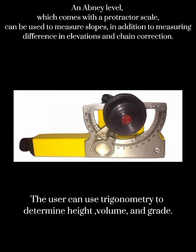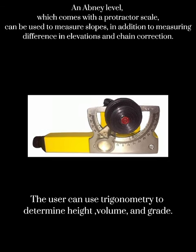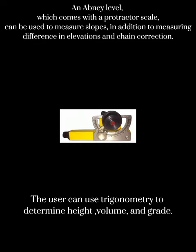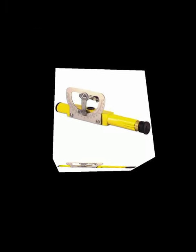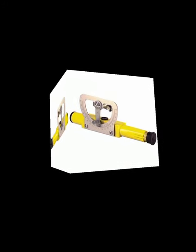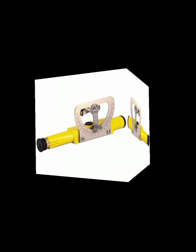An Abney level and clinometer is an instrument used in surveying to directly measure the slopes of plane surfaces by simply placing the body of the level on the surface, adjusting the level, and then reading the angle on the scale. The device should always be calibrated before use.